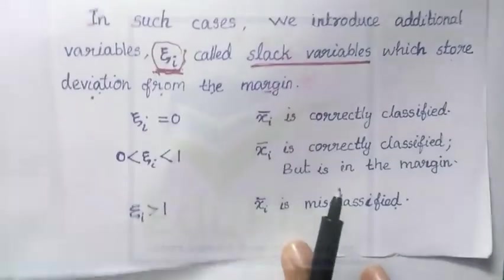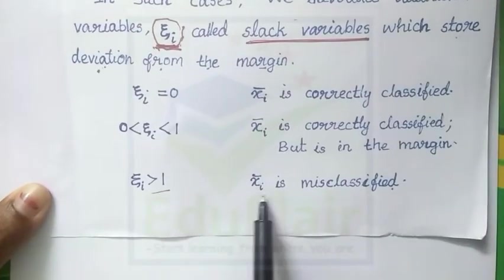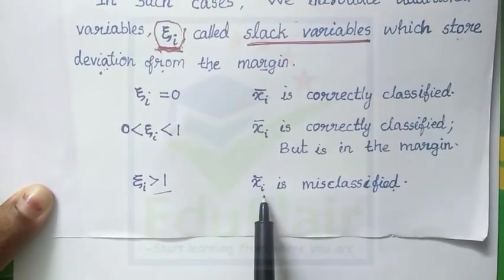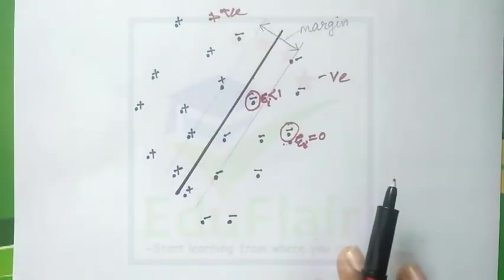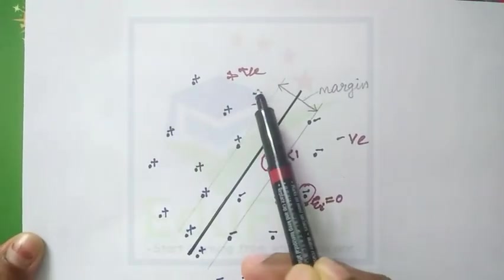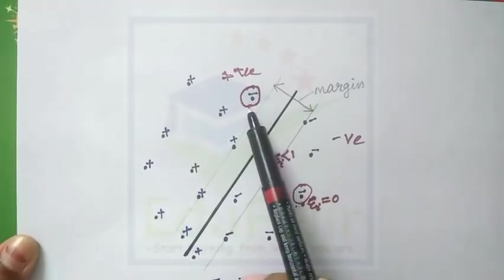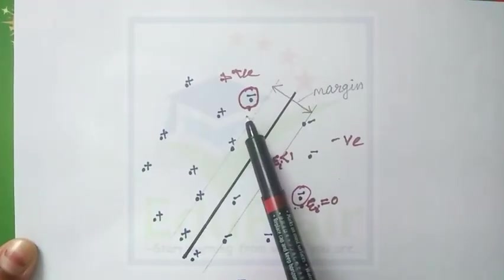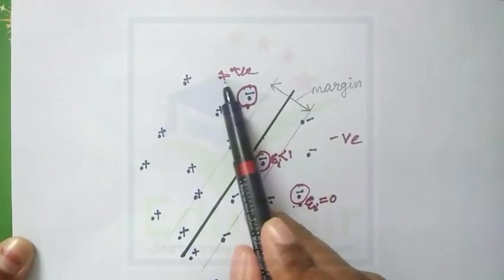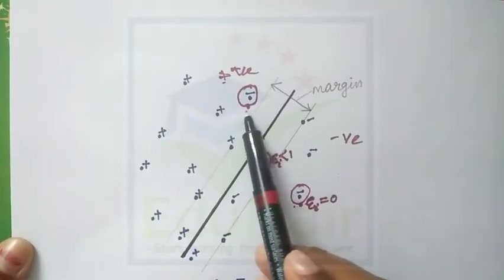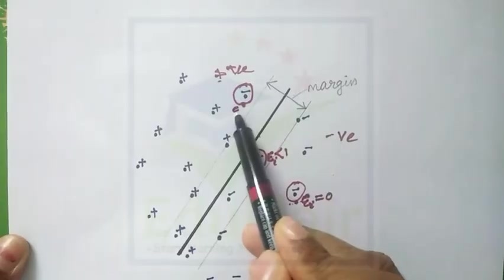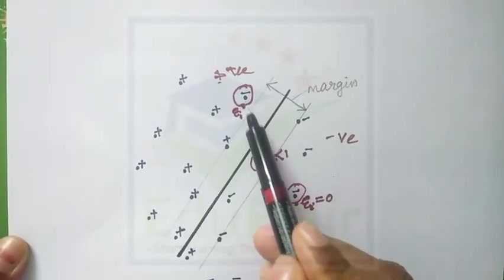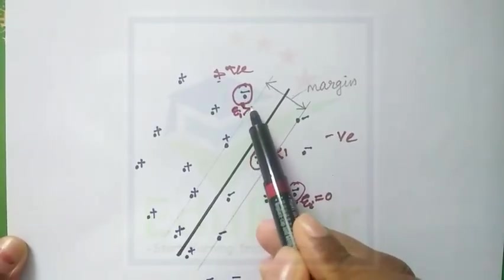The next case is when ψᵢ is greater than 1. This means the data point xᵢ is misclassified. Misclassified means this data point is a negative sample but it is classified as positive — so this data point is misclassified, and the value of ψᵢ for this data point is greater than 1.